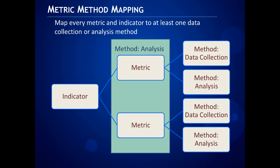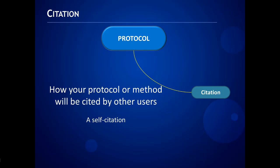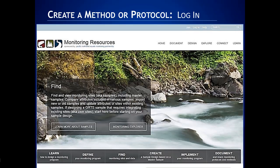Here's an example of mapping an analysis method. We might map an analysis method to a metric, but because more than one metric can determine an indicator, we may also map that method to that indicator. I'll talk about mapping in a bit. This protocol citation is simply a self-citation — a component of the protocol. So let's log in to create a method or a protocol.